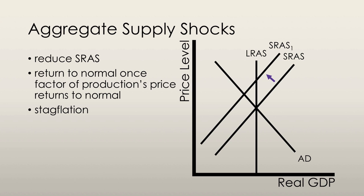Supply shocks are sudden increases in the prices of the factors of production that firms use to make their goods and services, and this will reduce short-run aggregate supply. However, short-run aggregate supply will return to normal once the price of the factor of production returns to normal. Aggregate demand will not adjust to fix the problem — aggregate supply has to shift. Stagflation is a combination of inflation and a recession, as we can see on the graph on screen right now.